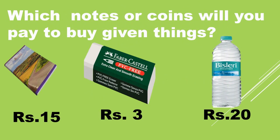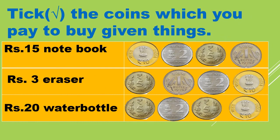Now students, here we have some things. Which notes or coins will you pay to buy the given things? The cost of the notebook is Rs. 15, the cost of the eraser is Rs. 3, and the cost of the bottle is Rs. 20. For the notebook costing Rs. 15, you would pay a 10-rupee coin and a 5-rupee coin.